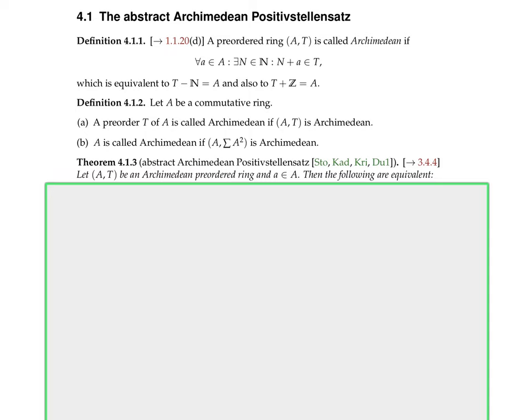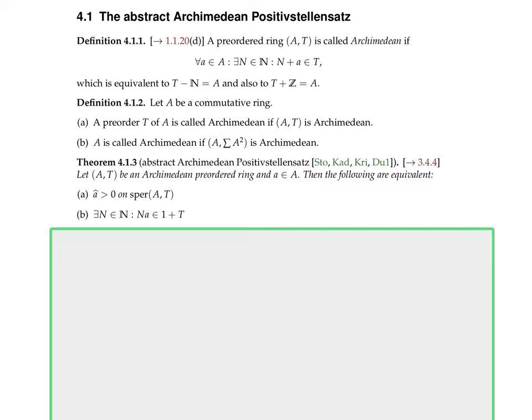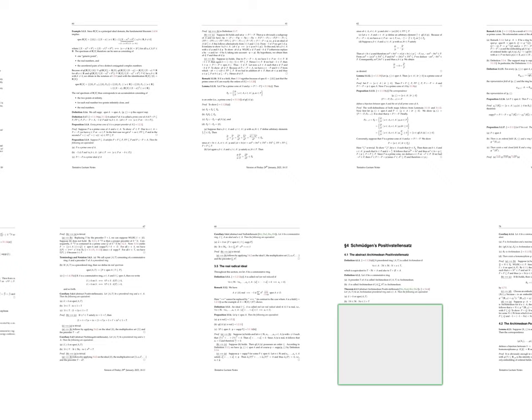Let (A,T) be an Archimedean pre-order ring and a in A. Then the following are equivalent: a-hat is positive on the real spectrum of (A,T), and there exists an n in ℕ such that n times a lies in 1 + T.